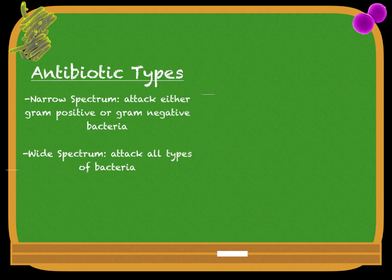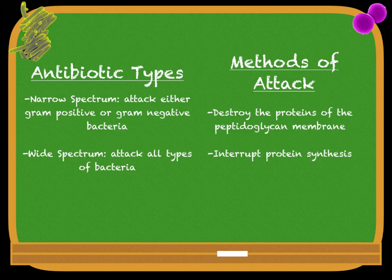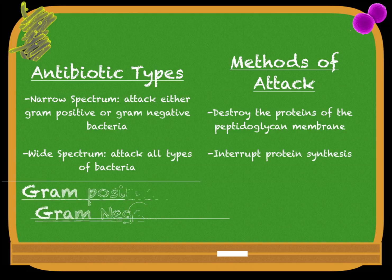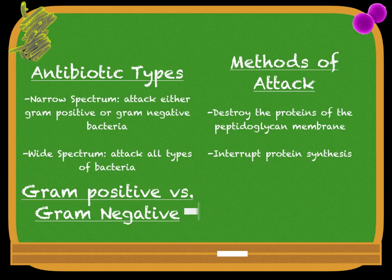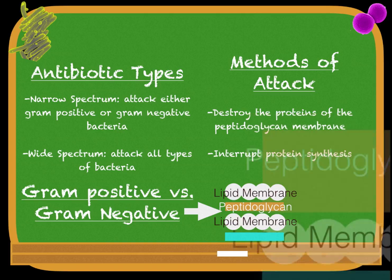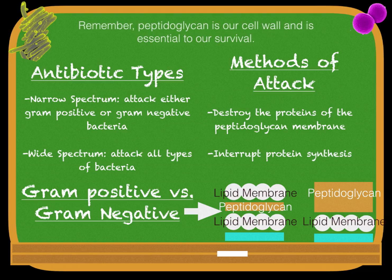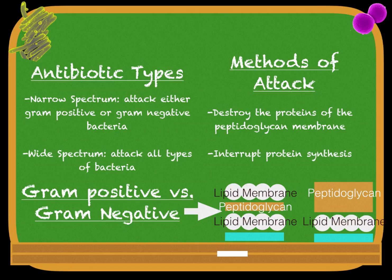Antibiotic types: narrow spectrum antibiotics attack either gram-positive or gram-negative bacteria. Wide-spectrum antibiotics attack both types. Methods of attack include: destroy the proteins of the peptidoglycan membrane, and interrupt protein synthesis. Gram-positive versus gram-negative — I don't have to say anything for this one. Remember, peptidoglycan is our cell wall and essential for our survival.